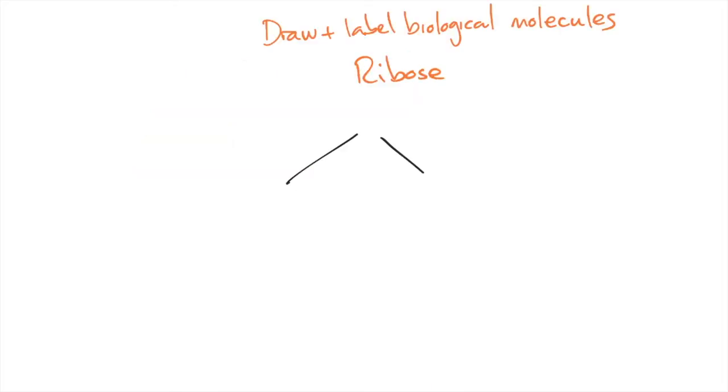Well hello, Kadeezy learners. We're going to do ribose today and we're going to start with the cupcake shape and then add our cherry on the top, the oxygen. Now it's a pentose sugar, so that means we need five carbons.